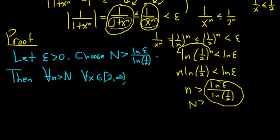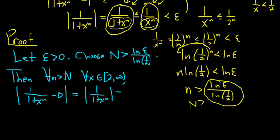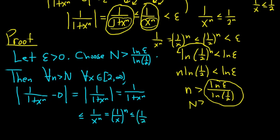That equals one over one plus x to the n — dropping the absolute value since x is positive. This is less than or equal to one over x to the n, and since one over x is less than or equal to one half, this gives us one over 2 to the n, i.e., one half to the n.